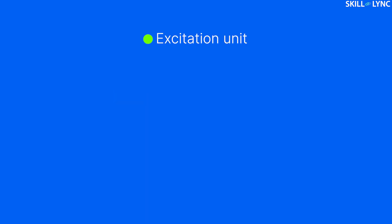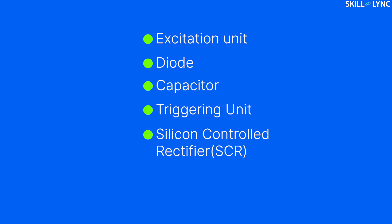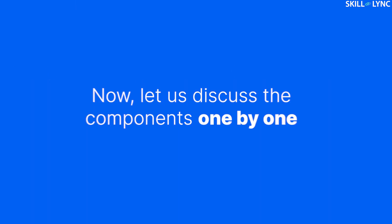A CDI system consists of an excitation unit, a diode, a capacitor, a triggering unit, a silicon-controlled rectifier, an ignition coil, and a spark plug. Now let us discuss these components one by one.